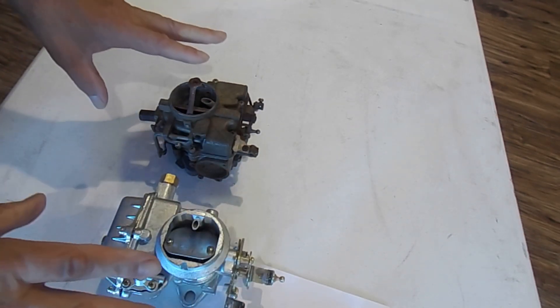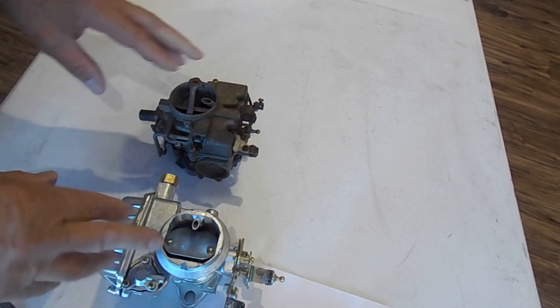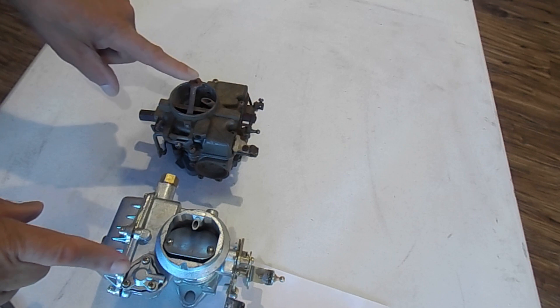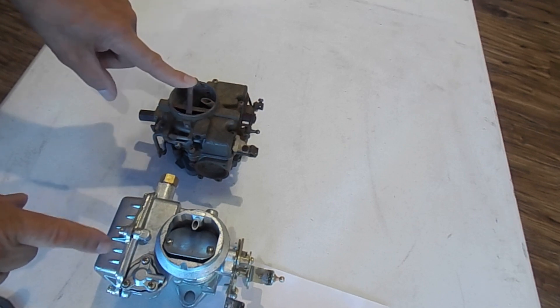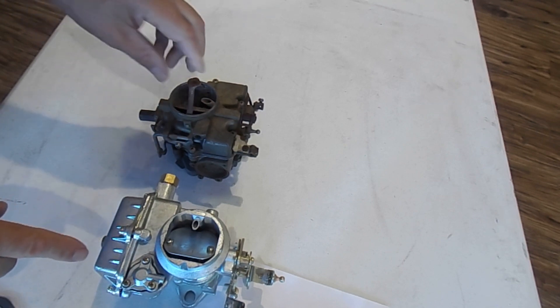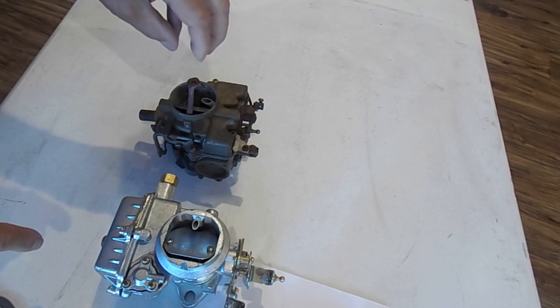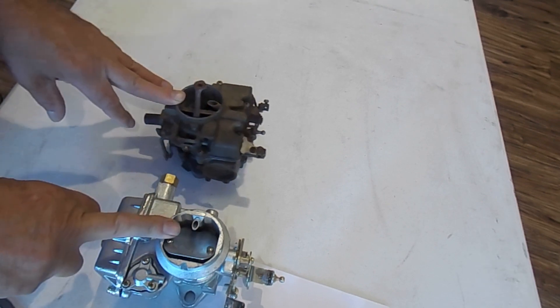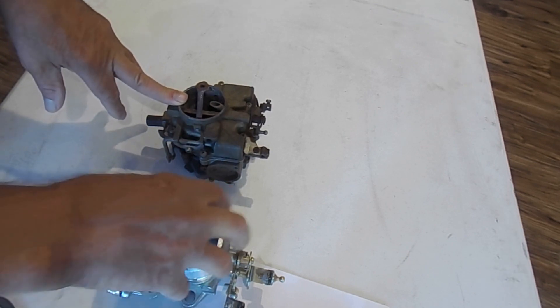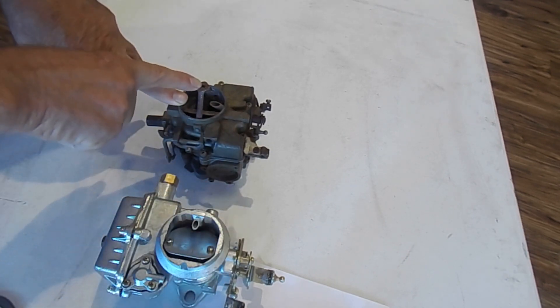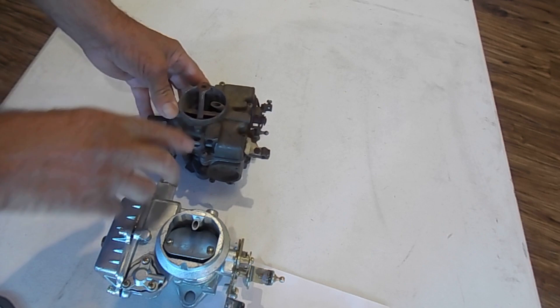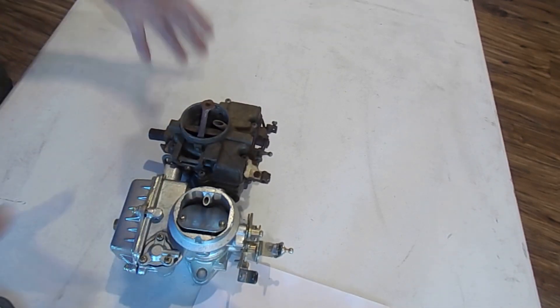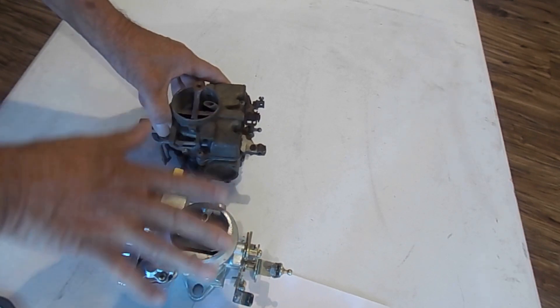I want to show you what you need to do in order to use this carburetor in place of this one. Right off the bat, this one has this bracket so the air cleaner can screw on to it. Well, this one doesn't. However, we do have an adapter available that you can put on here and it has this on it, so you can put your air cleaner on.